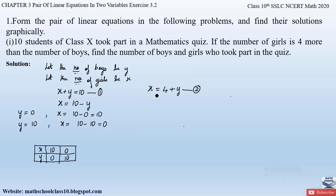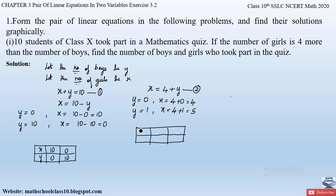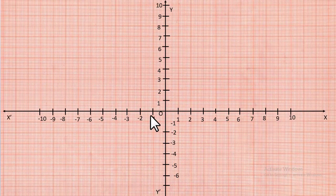Similarly, let us substitute values of y into equation 2, x = 4 + y. For y = 0, x = 4 + 0 = 4. For y = 1, x = 4 + 1 = 5. So the table for equation 2 gives us points: (x=4, y=0) and (x=5, y=1).